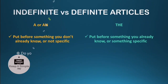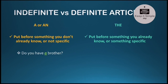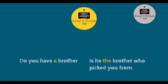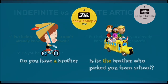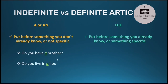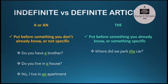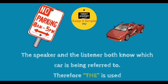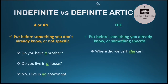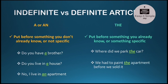More examples: 'Do you have a brother?' — here I'm not asking about any specific brother, I'm randomly asking whether you have any brother at all. It is not specific, so I use the indefinite article. Similarly, 'Do you live in a house?' — any house, nothing specific, so indefinite article. 'No, I live in an apartment.' For definite articles: 'Where did we park the car?' — both speaker and listener know which car they came in and where they parked it. That's specific, so we use 'the.'